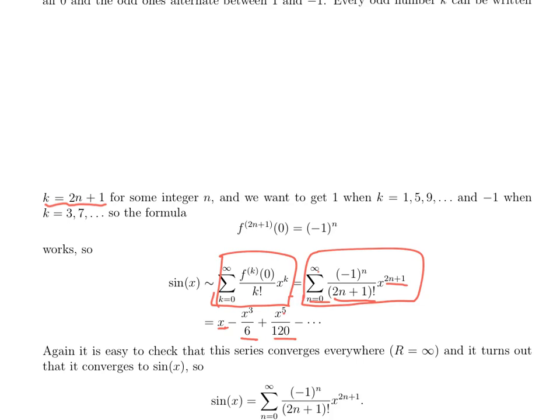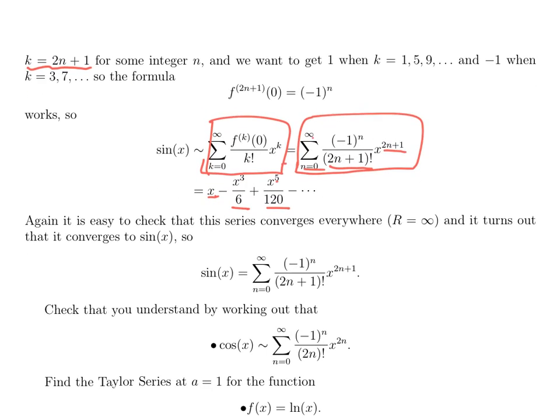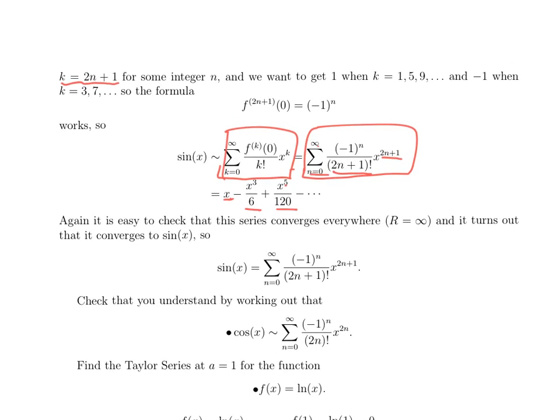Once again, not too hard to check that this series converges everywhere. The radius is infinity. And it turns out that what it converges to everywhere is sine of x. So we're justified in writing that sine of x is equal to this infinite series. So if you want to find the sine of 0.4, you plug 0.4 into this polynomial, you keep taking more terms until you've got it as accurately as you need.